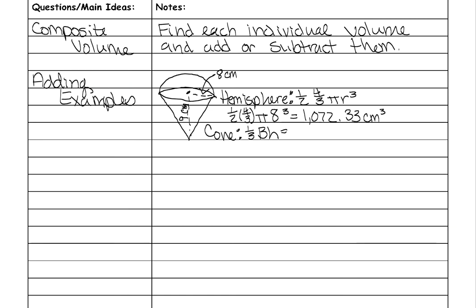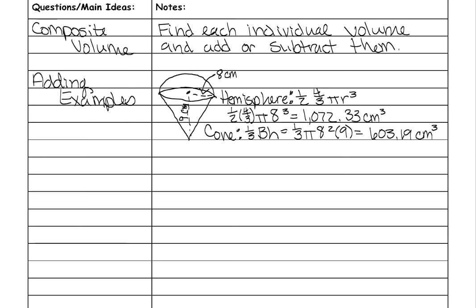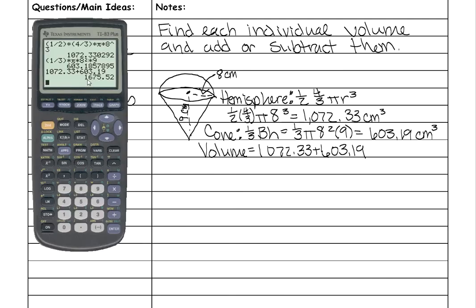Now we need to find the volume of the cone. The formula is one-third times the area of the base times the height. The base of a cone is a circle, so it's one-third times pi r squared times the height: one-third times pi times 8 squared times 9. Put all that in your calculator, and you get 603.19 cubic centimeters. To find the total volume of the whole snow cone, add both together: 1,072.33 plus 603.19 equals 1,675.52 cubic centimeters.